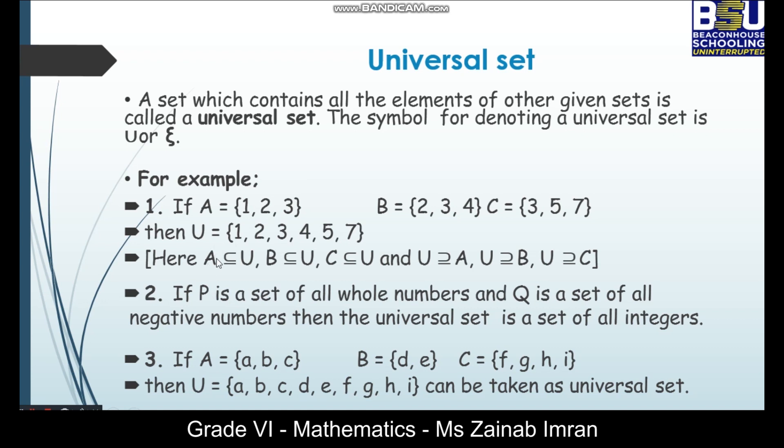Here, A is a subset of U, B is a subset of U and C is also a subset of U. And what about U? U is actually a superset of A, U is a superset of B and C as well.